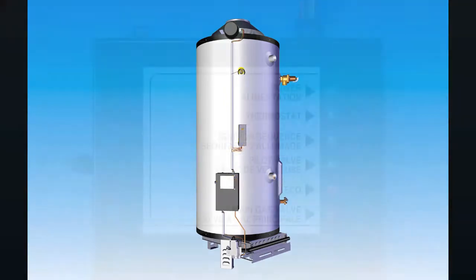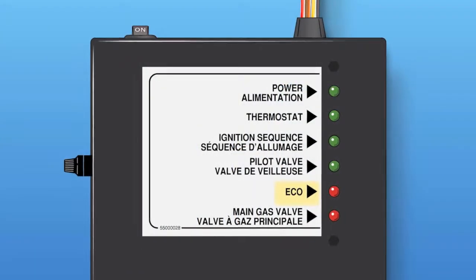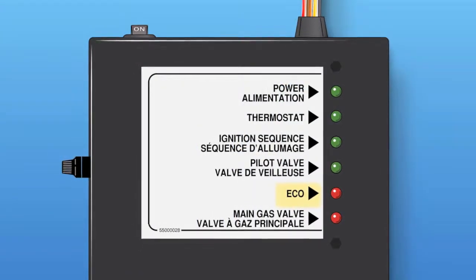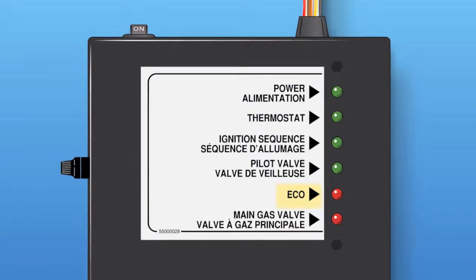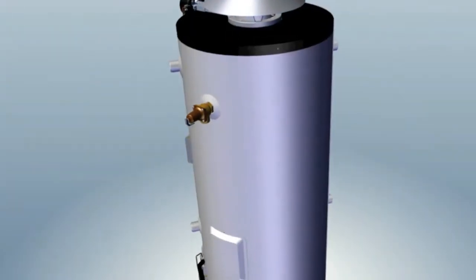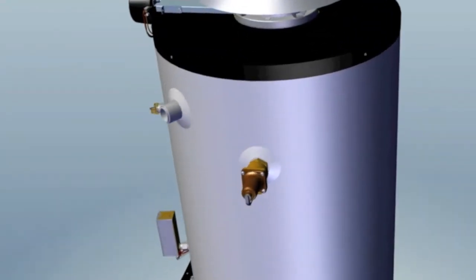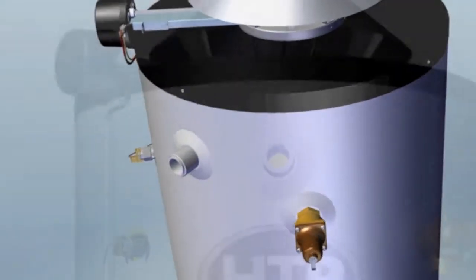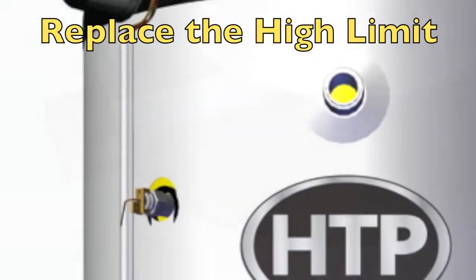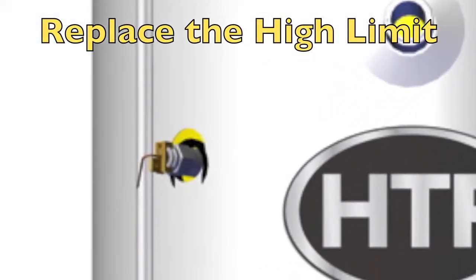Step 5: ECO. If the ECO LED is red, then the ECO is open and you must allow the water in the tank to cool and the ECO to reset. If the ECO continues to trip, then the thermostat high limit control is defective. Replace the high limit.